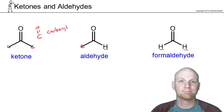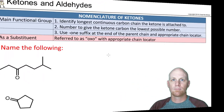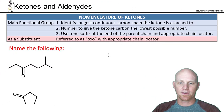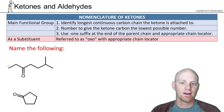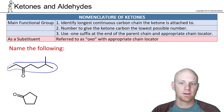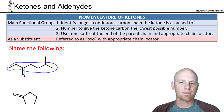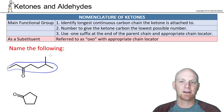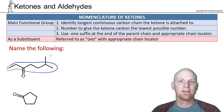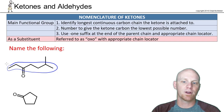To name a ketone, first find the longest continuous carbon chain the ketone is attached to. Here, a methyl group could have been part of the longest chain — they're equivalent either way. Then number the chain to give the ketone's carbonyl carbon the lowest possible number.